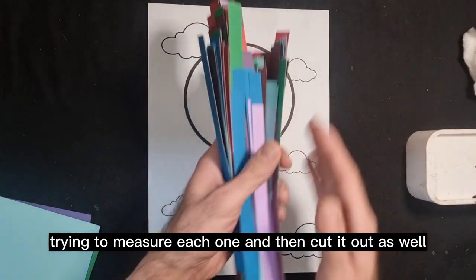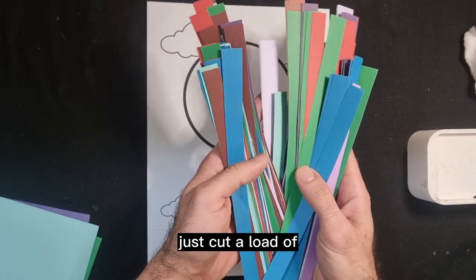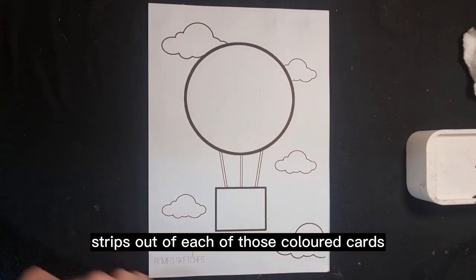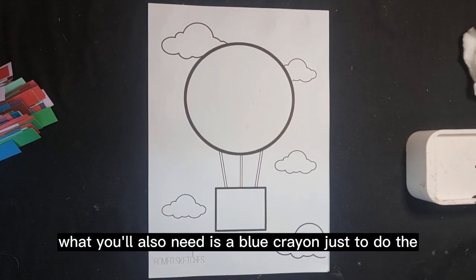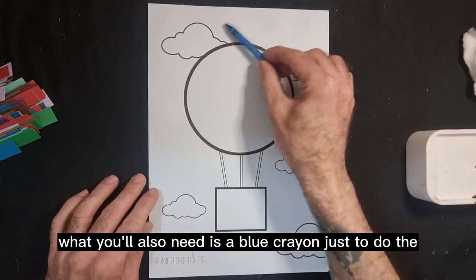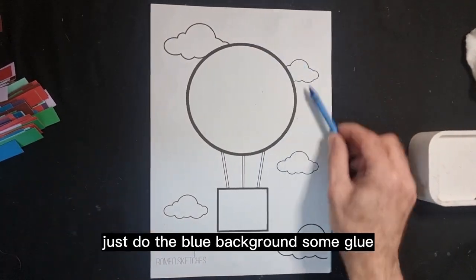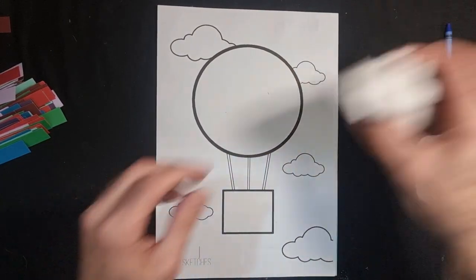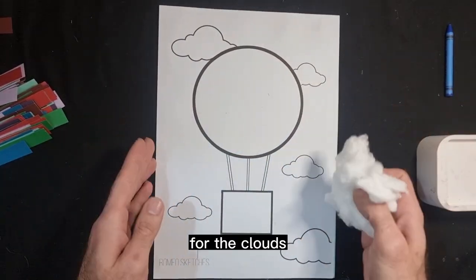I just randomly cut a load of strips out of each of those colored cards. What you'll also need is a blue crayon just to do the sky, or you can paint it as well, just do the blue background, some glue, and some cotton wool for the clouds.